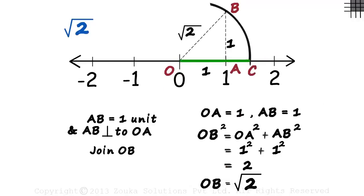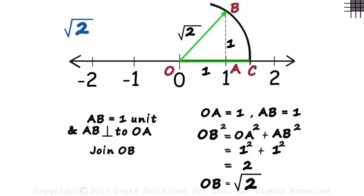This green length OC will equal this length, since they are the radii of the same circle. Hence, length OC is also equal to root 2.